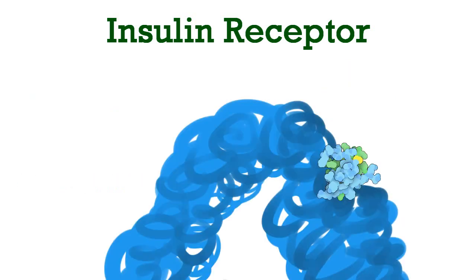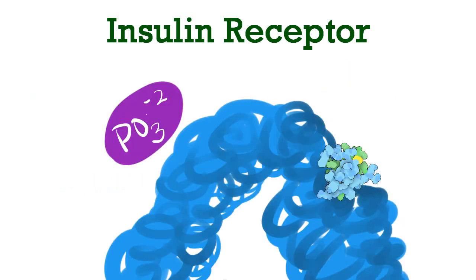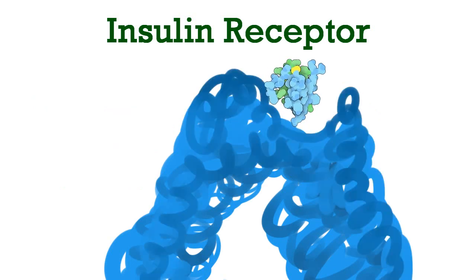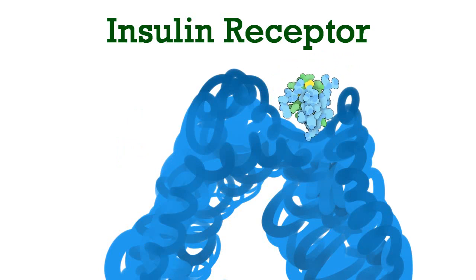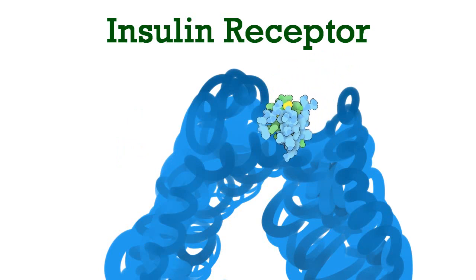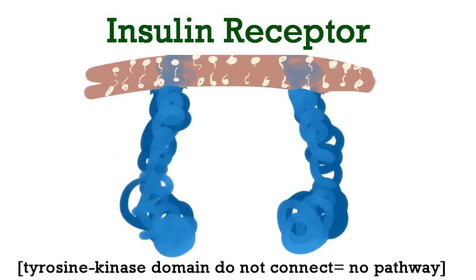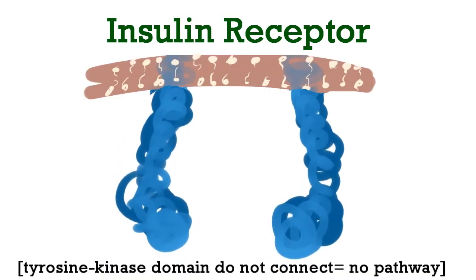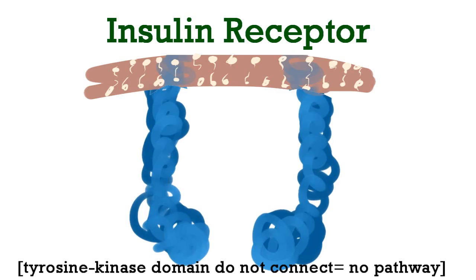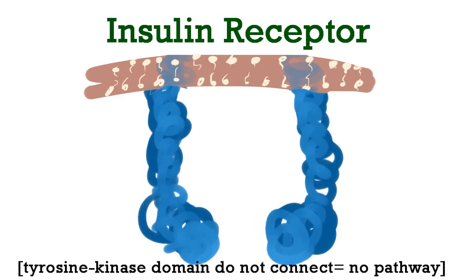Usually these domains work together. However, when the receptor is phosphorylated, there is an allosteric change which alters the insulin binding portion of the protein. Due to this change, the binding site no longer functions, preventing the signal transduction pathway and the cellular response that causes sugar intake.